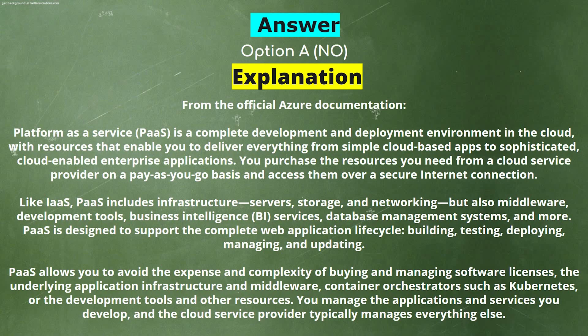PaaS is designed to support the complete web application lifecycle — building, testing, deploying, managing, and updating. PaaS allows you to avoid the expense and complexity of buying and managing software licenses, the underlying application infrastructure, middleware, container orchestrators such as Kubernetes, deployment tools, and other resources. You manage the applications and services you develop, and the cloud service provider typically manages everything else.